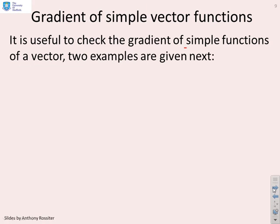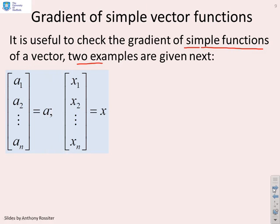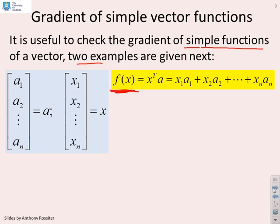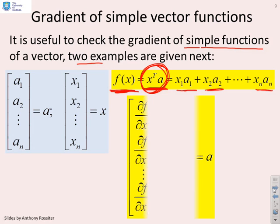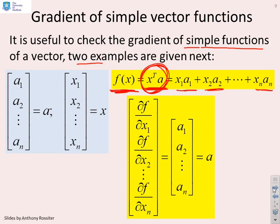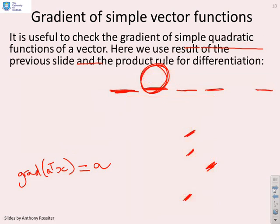Let's look at the gradient of some simple functions as they appear in this performance index. Define a vector a = [a1, ..., an] and a vector x = [x1, ..., xn] as the degrees of freedom. For a function f(x) = x^T a, which is linear in x, the gradient gives the vector [a1, a2, ..., an] — that is, just a. So: grad(a^T x) = a. This is a key result we will use.